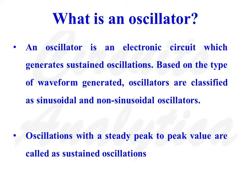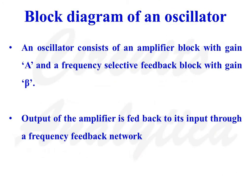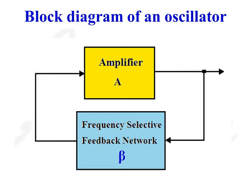Oscillations with a steady peak-to-peak value are called sustained oscillations. The block diagram of an oscillator consists of an amplifier block with gain A and a frequency selective feedback block with gain beta. The output of the amplifier is fed back to its input through the frequency selective feedback network.